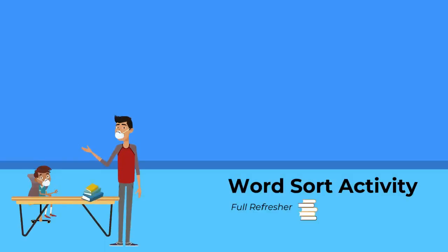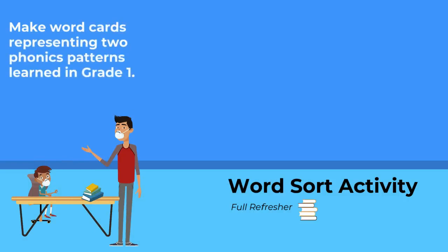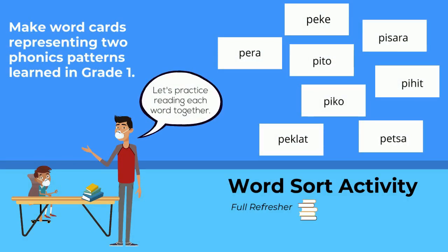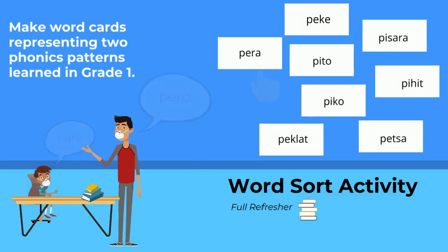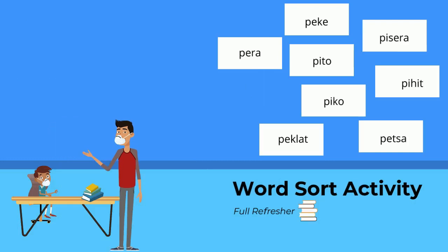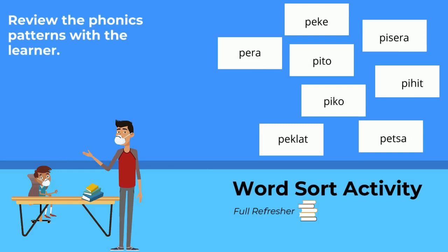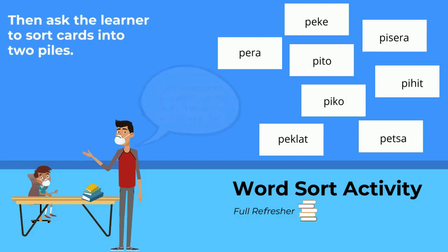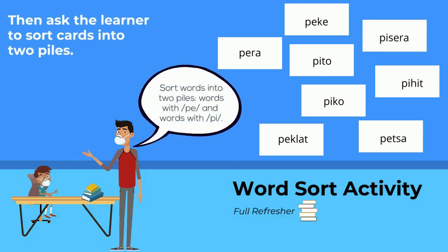For this activity, start by making word cards that represent two phonics patterns learned in the beginning of Grade 1. Practice reading the words together with a child. Review the two phonics patterns with a learner and then ask them to sort the words into two different piles.